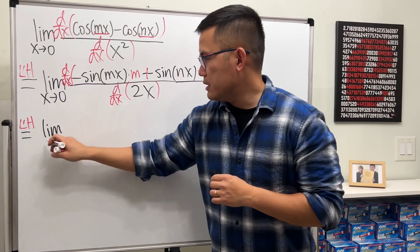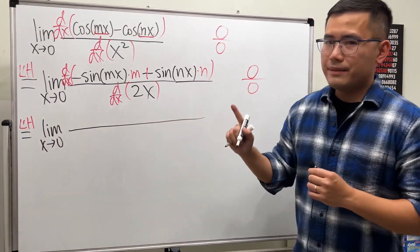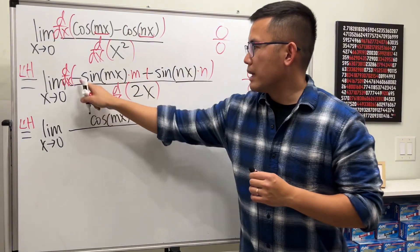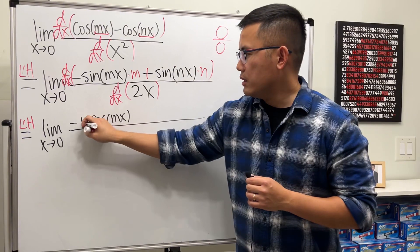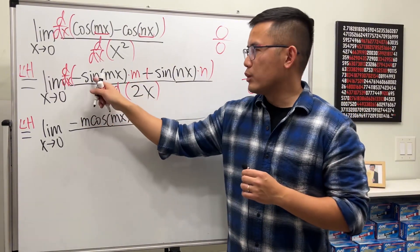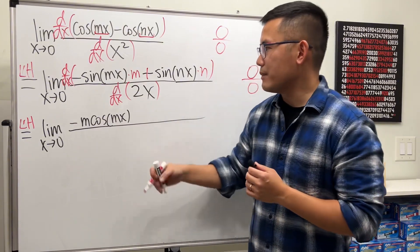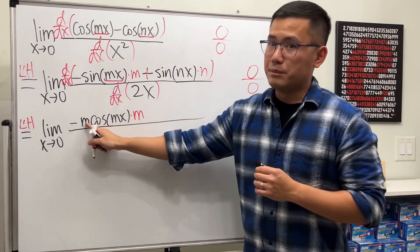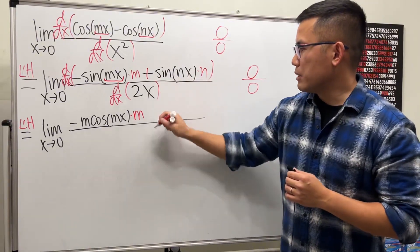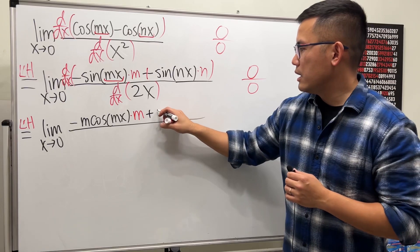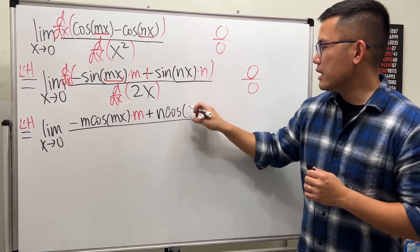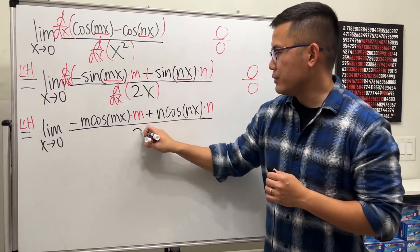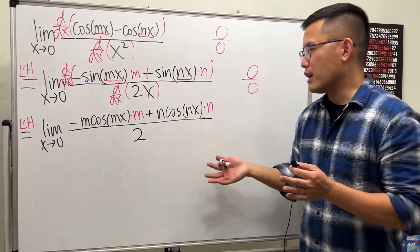The limit as x approaches zero: the derivative of sine is cosine, so we get negative cosine(mx), carry the m from earlier, and use the chain rule again — multiply by the derivative of mx which is m, giving m². For the second term: plus n, the derivative of sine is cosine, giving cosine(nx), multiplied by the derivative of nx which is n, giving n². The bottom is just 2, with no more x.